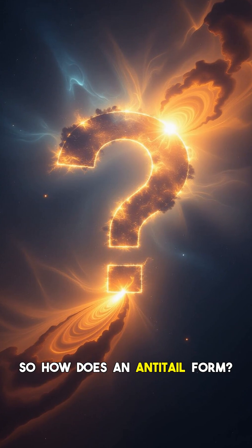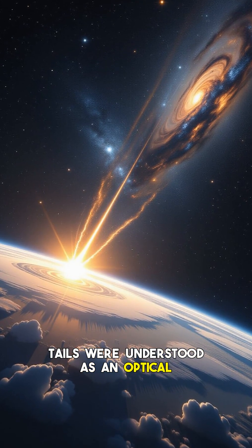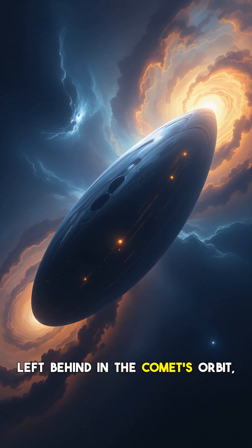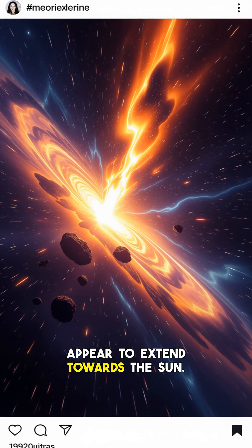So, how does an anti-tail form? For many years, these sunward-pointing tails were understood as an optical illusion. They consist of larger dust particles left behind in the comet's orbit, which, when viewed from Earth at certain angles, appear to extend towards the sun.